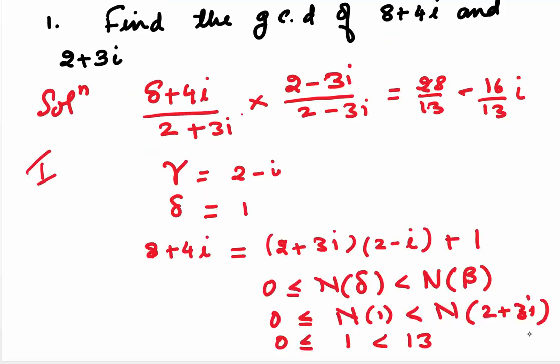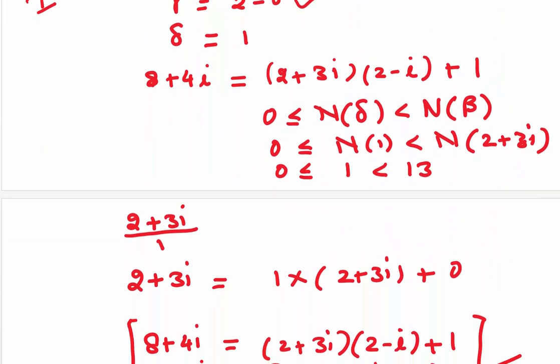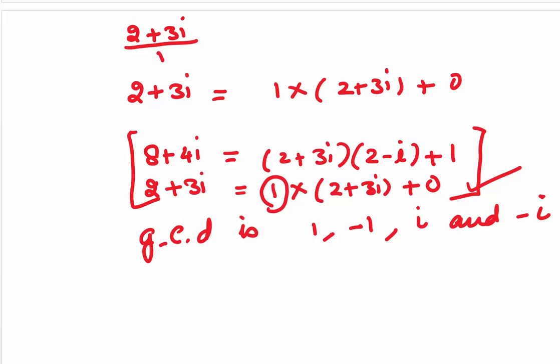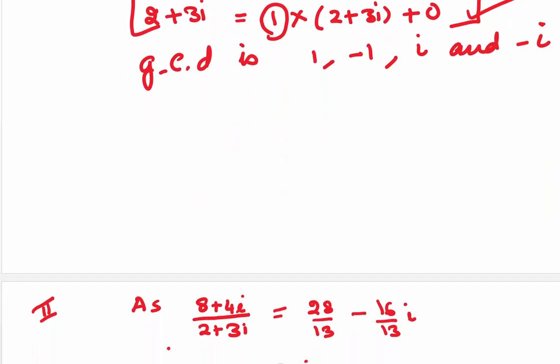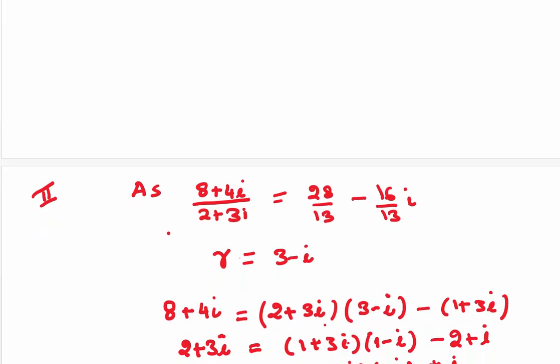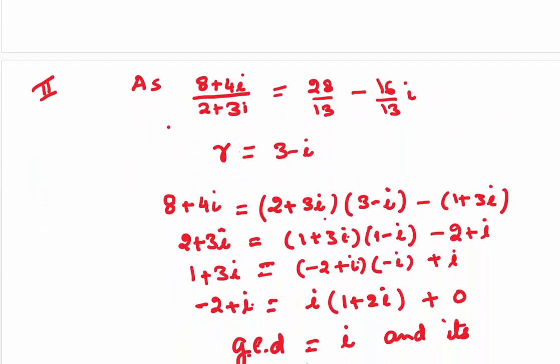Now, when we round off our fractions like here, 28 by 13 and 16 by 13, we get a gamma. In the first case, we have taken gamma to be 2 minus i and you saw that the GCD was nothing but 1, minus 1, i and minus i. I want you to see that if we take another gamma, that is, our rounding off is different, still, we would be getting the same GCD.